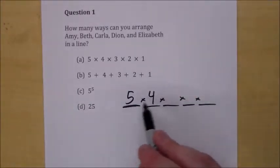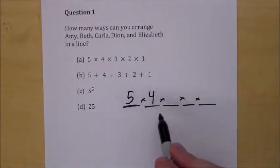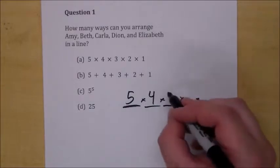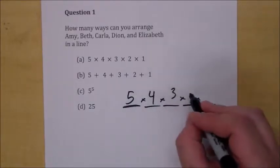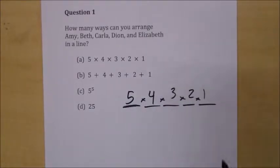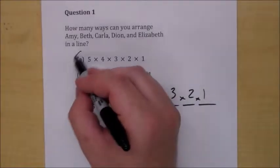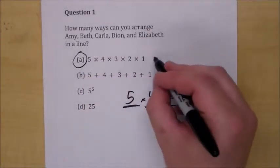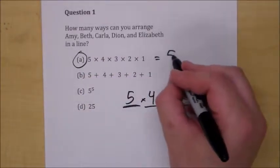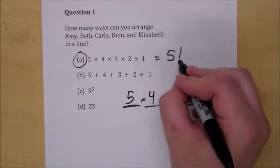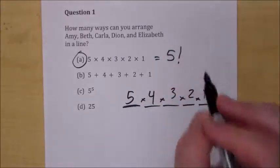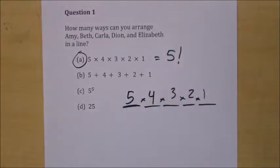If you already put two people in the first two seats, well there's only three left, then two left, then one left. So the answer is 5 × 4 × 3 × 2 × 1, otherwise known as five factorial, which we'll get to later.